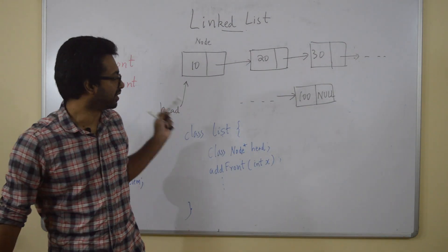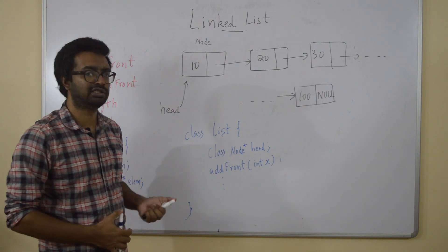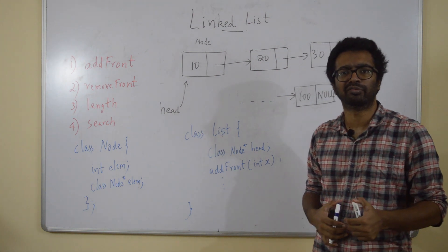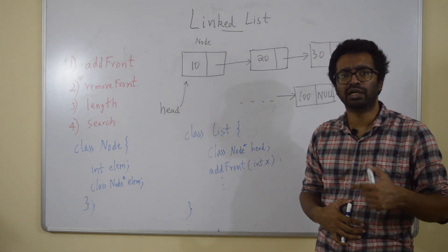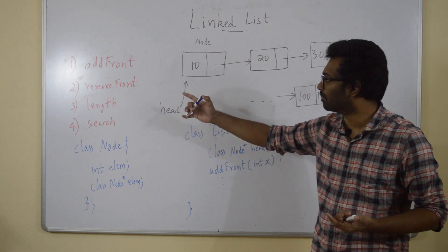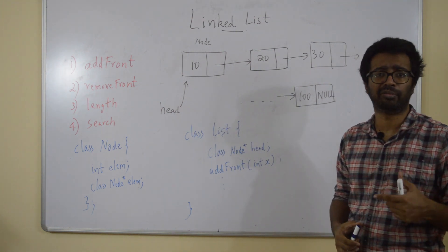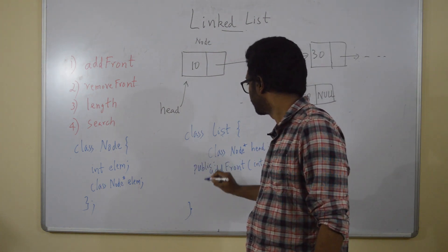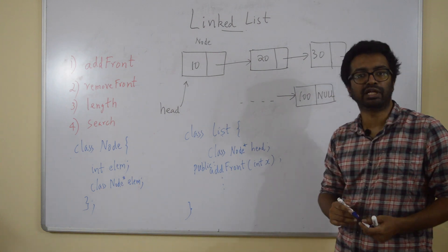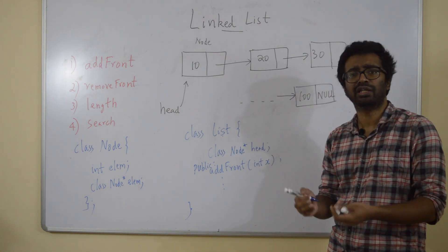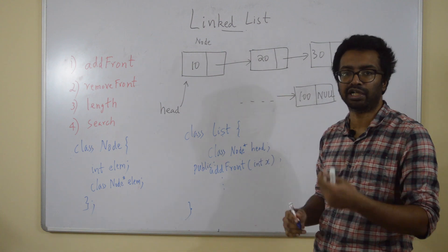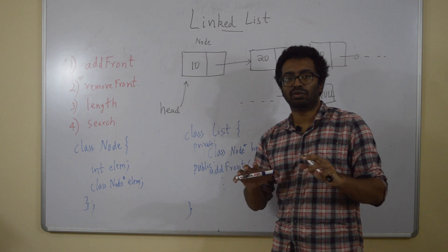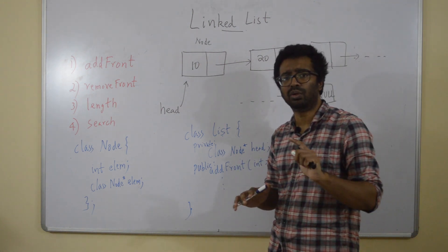This is how my list class is going to be. There are private and public members: the functions add, remove, length, and search should be public because users need to use them. The head pointer, however, should be private — others need not know about the head pointer.